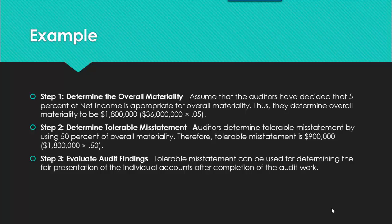We're going to take an example from the book, using the organization the book presents throughout the chapters. The first thing is to determine the overall materiality. Net income before taxes is about $36 million; at 5%, the overall materiality is $1.8 million. We then determine the tolerable misstatement level at the account balance and classes of transaction using the 50% rule. Therefore, the tolerable misstatement is $900,000, which can be used for determining the fair presentation of individual accounts.